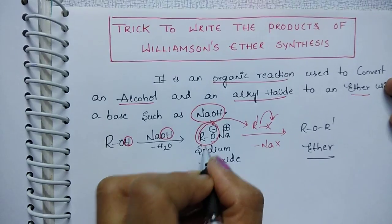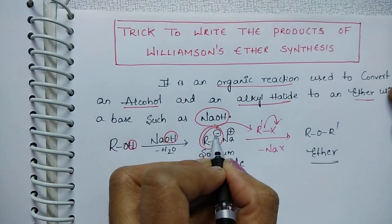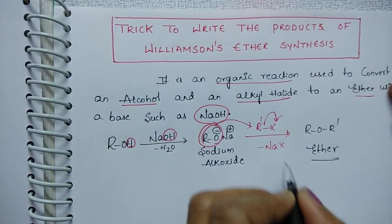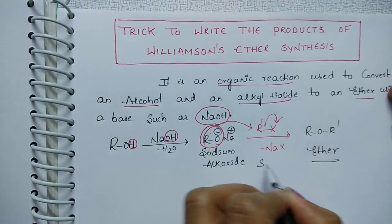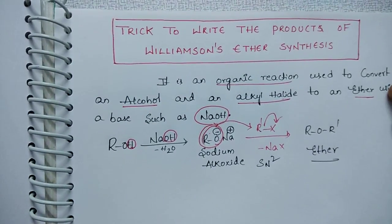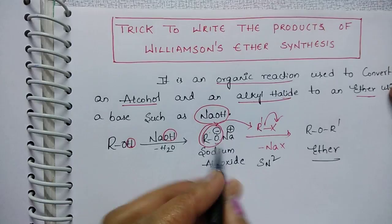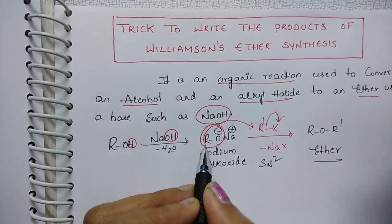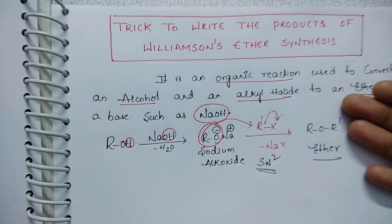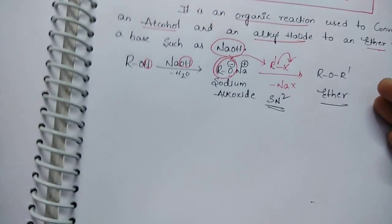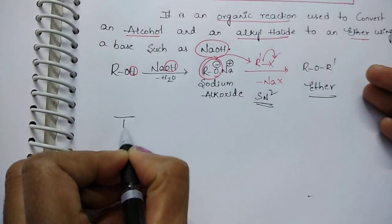Here, the strong nucleophile attacks the carbon of the alkyl group, and it proceeds through the SN2 mechanism, because we know that a strong nucleophile always favors the SN2 mechanism.